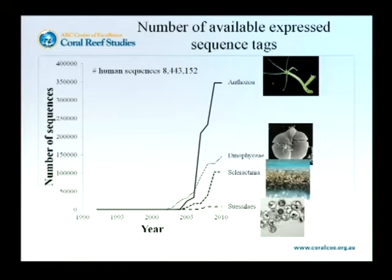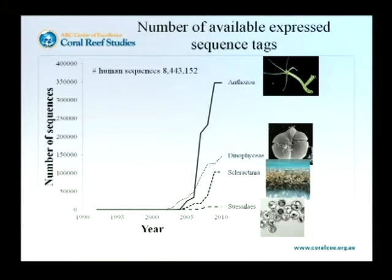Dinoflagellates as a group are actually really poorly studied. It's a very large group, but for the class dinoflagellate we only know somewhere in the order of about 200,000 genes. We can compare that to the anthozoans, which is what scleractinian corals belong to, sitting now at about 350,000. In comparison, everybody's favourite study organism — humans — has somewhere in the order of about 8.5 million sequences, or ESTs, now available, in addition to the human genome.